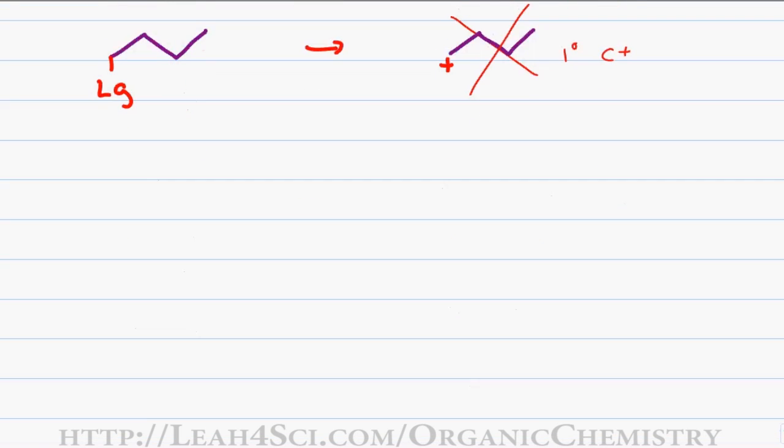At times, you'll come across a reaction where the carbocation that forms is the more stable of possibilities. For example, in this hydrohalogenation of an alkene. The reaction will start out as a standard alkene reaction with the Markovnikov or secondary carbocation forming as a result of the pi bond attacking the hydrogen.